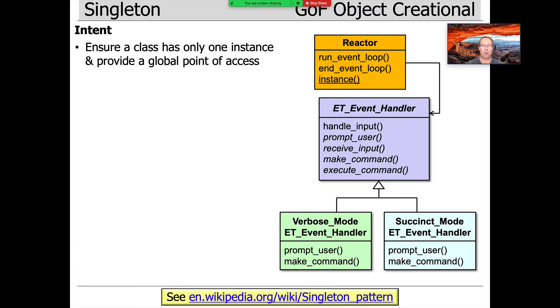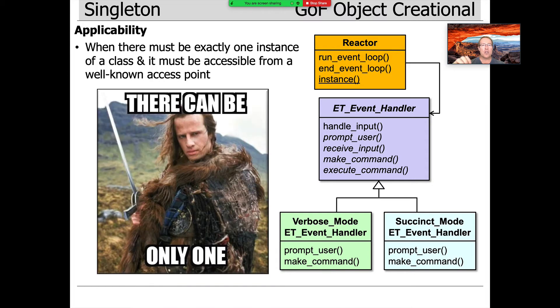In our case, for example, we're going to have a reactor, the R1 instance. You should apply this pattern when there has to be exactly one instance of a class, and it must be accessible from a well-known access point.